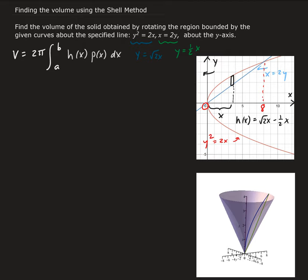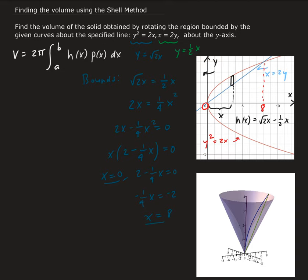For the bounds: we know y squared equals 2x and x equals 2y. Setting the two functions equal: square root of 2x equals one-half x. Squaring both sides gives 2x equals one-fourth x squared, so 2x minus one-fourth x squared equals 0. Factoring out x gives x(2 minus one-fourth x) equals 0, so x equals 0 and x equals 8. Those are our bounds.